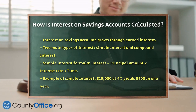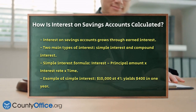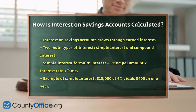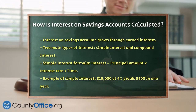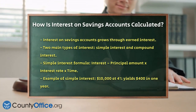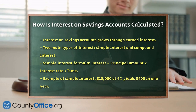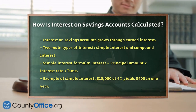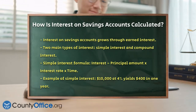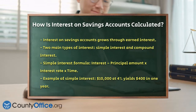Let's start with simple interest. This is the easiest way to understand how interest works. The formula is straightforward: Interest equals principal amount × interest rate × time.